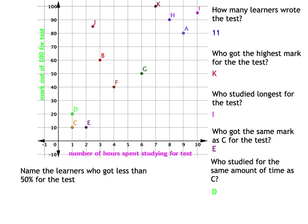Next question: name the learners who got less than 50% for the test. Where is the 50% mark? It's there. Who got less than it will be the learners who are below that, and that'll be C, D, E, and F.